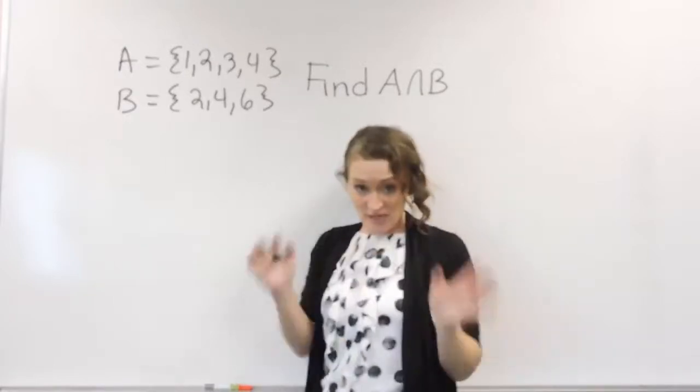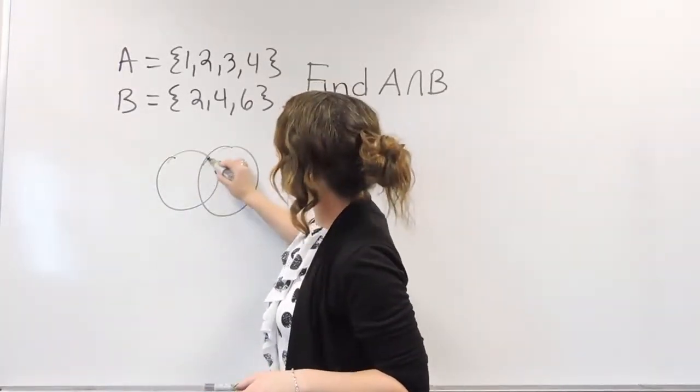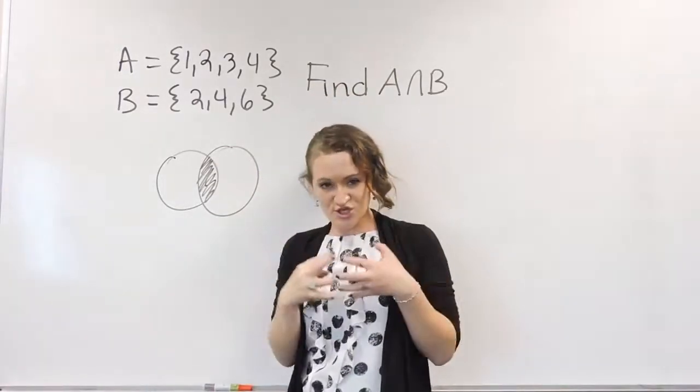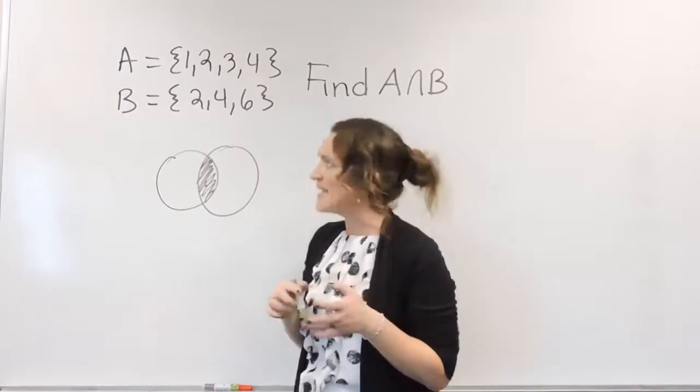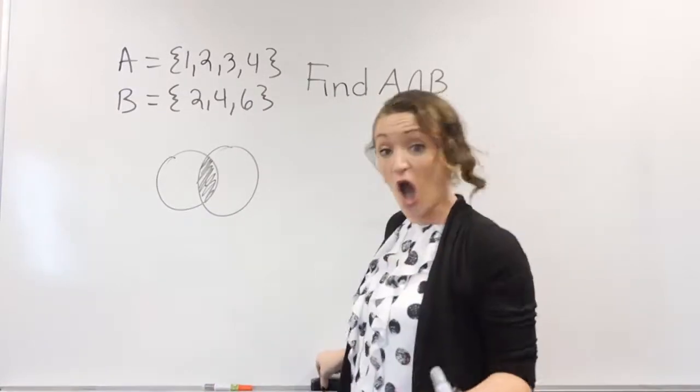When it comes to finding the intersection, think about a Venn diagram here. The intersection is that space there that they both share. We're only interested in what they share, what they have in common.